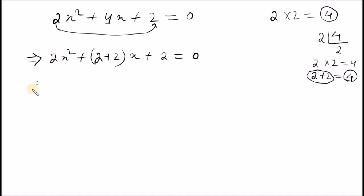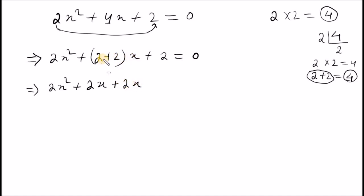So the middle term implies 2x plus 2 into x plus 2, into x plus 2. The first, second, third, fourth terms are grouped.